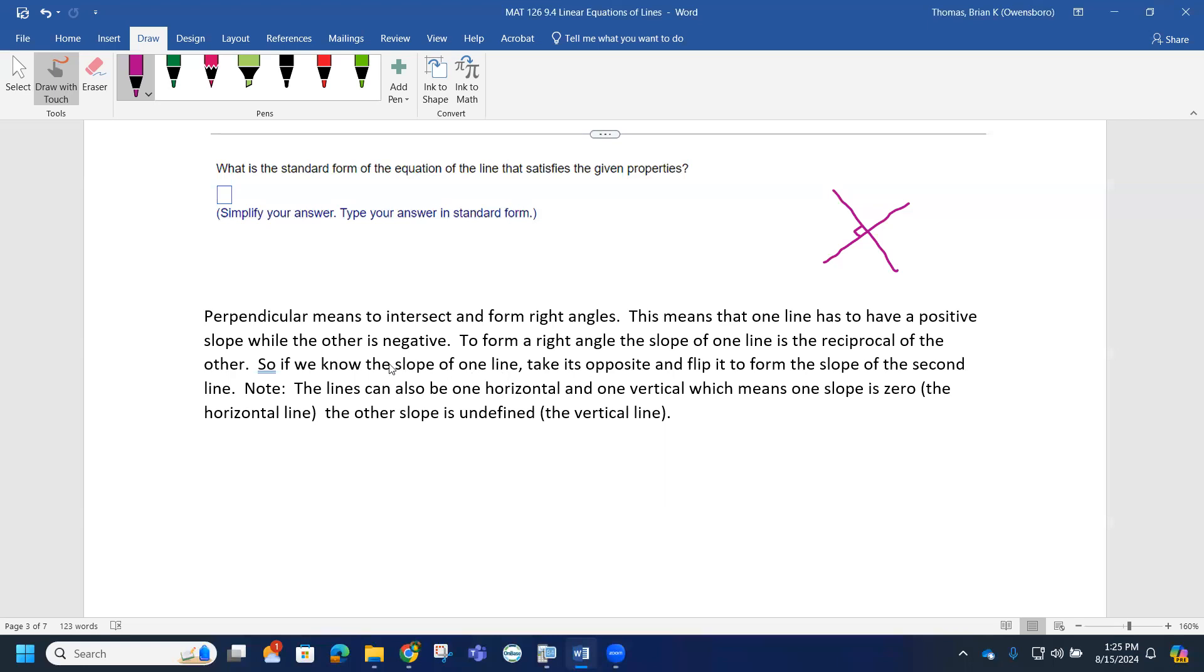So as I beat around the bush here, here's kind of what we need to pick up on. If we know the slope of one line, take its opposite and flip it to form the slope of the second line. If I do that, that will create a perpendicular slope.